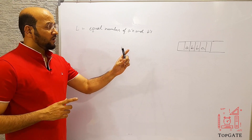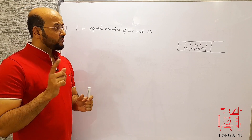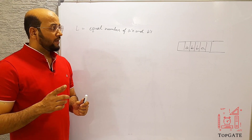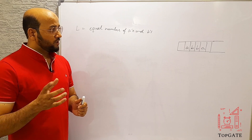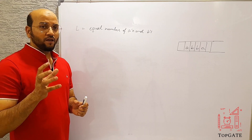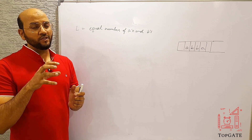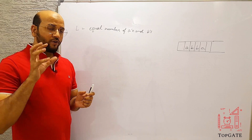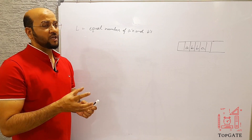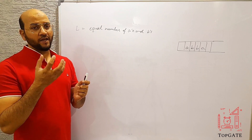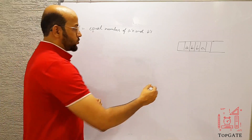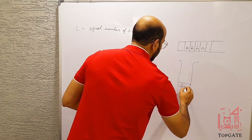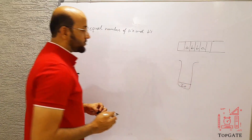The logic is: as soon as the first A comes, we push it into the stack. Whenever a B comes, we pop that A from the stack. Every time an A comes we are pushing it, and every time a B comes we are popping it out. The stack has Z0 as the bottom-of-stack symbol by default.